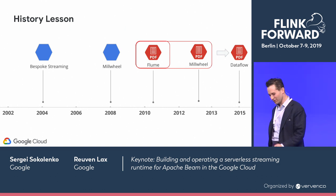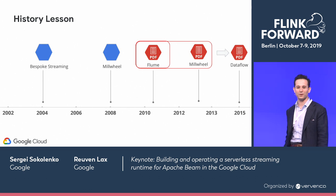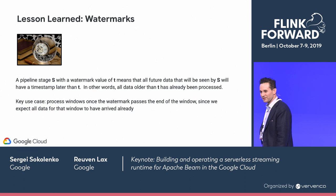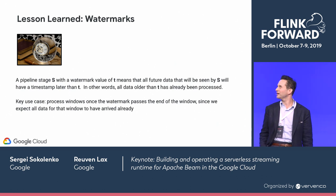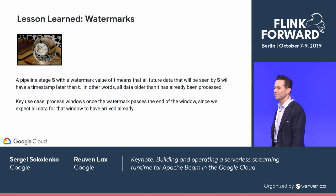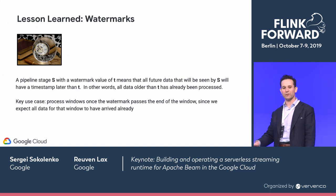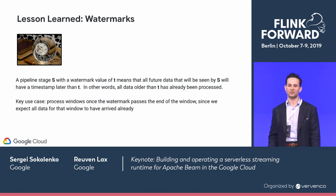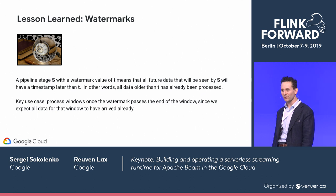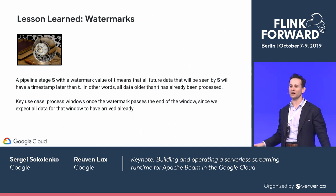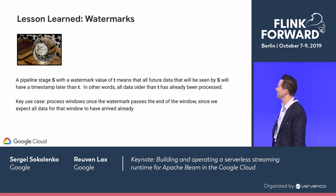One of the lessons we learned, which should be familiar to people who have used Flink extensively, is watermarks. A watermark is just a way of tracking time. A watermark says that we think we've processed all data up until this point. So if a watermark is 12 o'clock, that means all records with an event timestamp earlier than 12 o'clock have already been processed. For windowed aggregations, any windows finishing earlier than 12 o'clock can now be closed and processed.